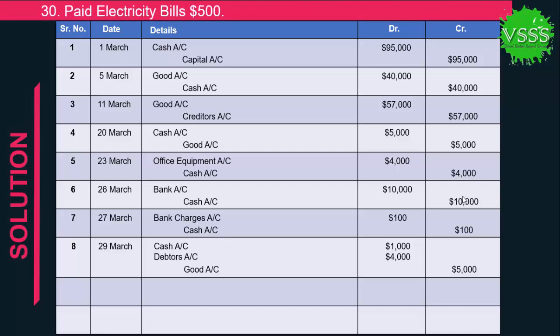Transaction 9: Paid electricity bill $500. When expenses increase they are debited, and cash decreases so it is credited. Electricity bill account is debited by $500 and cash account is credited by $500. Transaction 10: Paid salaries $3,000 from bank. Salaries are an expense that increases, so salaries are debited by $3,000 and bank account is credited by $3,000.